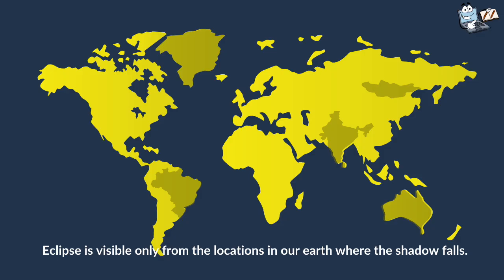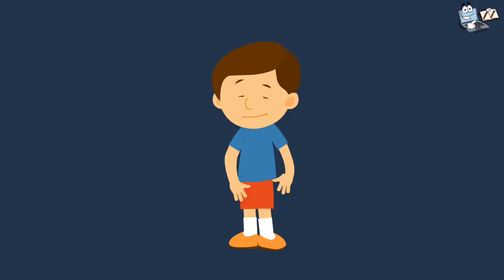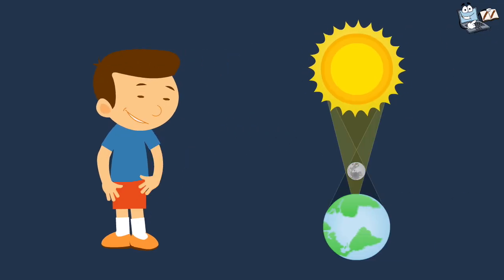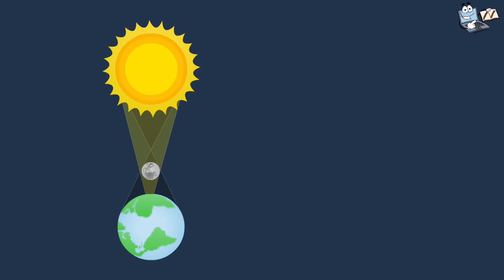From these parts or locations of Earth, it appears as if the sun has vanished and gone dark. The shadow created on Earth by the moon at the time of solar eclipse is broken down into three parts.